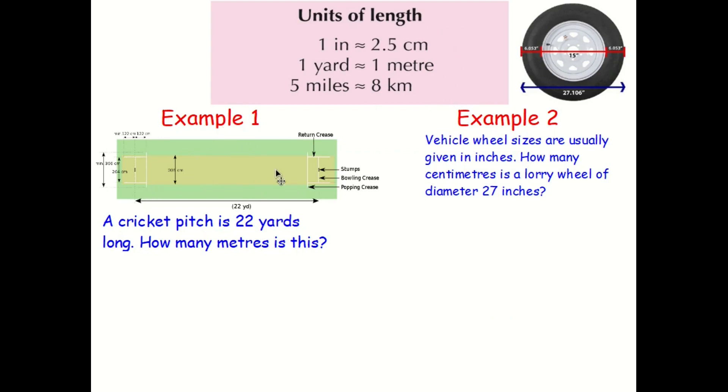So here we've got a cricket pitch. And it says a cricket pitch is 22 yards long. How many metres is this? So what you need to do at the beginning of every question where you're converting between one thing and another is to remind yourself and remind whoever's marking it that you know what the conversion is. And by that I mean this. So one yard is equal or roughly approximately equal to one metre.